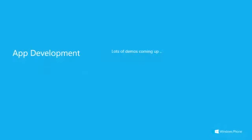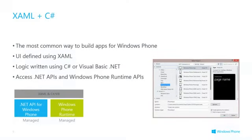Let's see how we can actually build an app on that platform. The most common way of building apps for Windows Phone is to define the UI using a language called Extensible Application Markup Language, XAML.